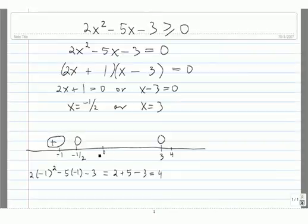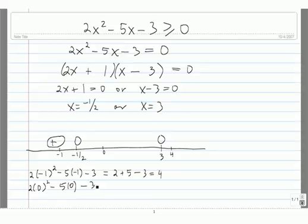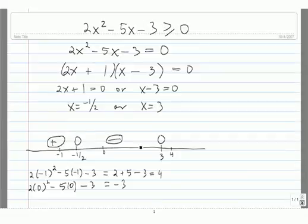Now we check the test number 0 by plugging it into the function. We have 2 times 0 squared minus 5 times 0 minus 3, which equals 0 minus 0 minus 3, so that's negative 3. The sign everywhere in between negative 1 half and 3 is negative — the function is negative everywhere there.